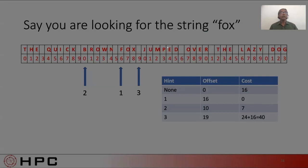The answer is as follows. In the first case, if you look at it, we had no hint at all. So we would start, the offset is zero and our cost is 16. In the second case, we are told exactly where the word fox starts from. We have virtually zero cost.